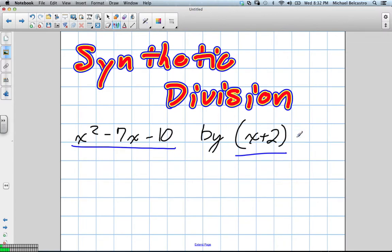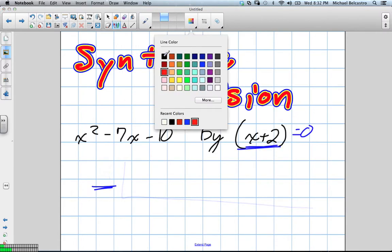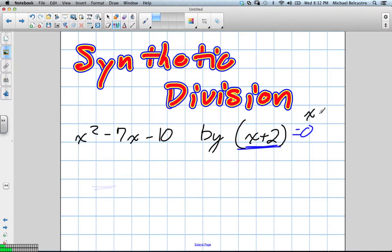First thing we need to do is figure out what our k value is going to be. Our k value is usually what's outside of the synthetic division. This being our k value. We set what we're dividing by equal to 0 in order to solve it. So, x plus 2 equals 0. What is x?